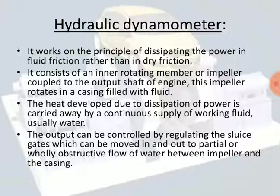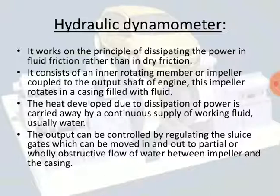In simple words, if fluid friction is being used instead of dry friction, it is a case of a hydraulic dynamometer. In the hydraulic dynamometer, water is used as the working fluid to maintain the temperature of the engine. The working fluid rotates the rotor, which is connected to the output shaft and transmits the power developed to the engine shaft.